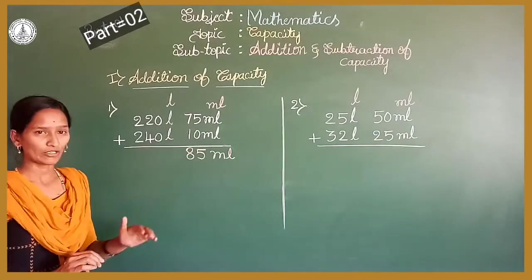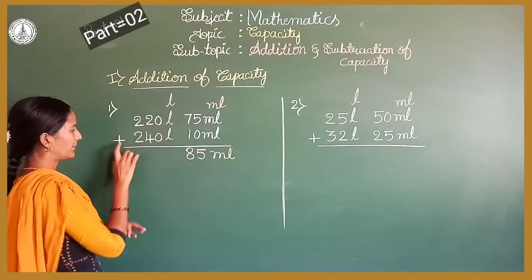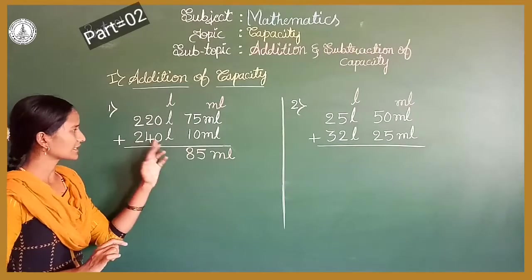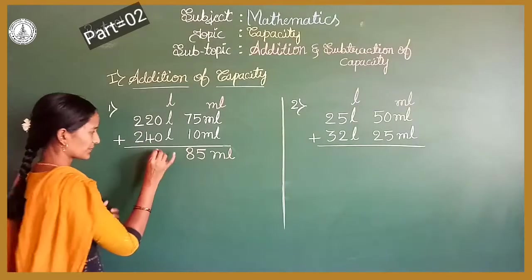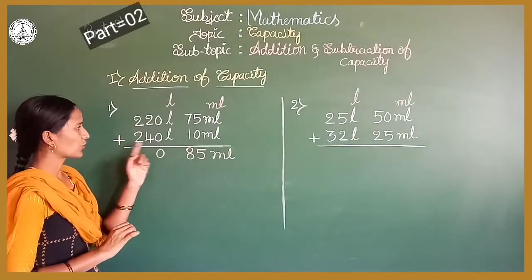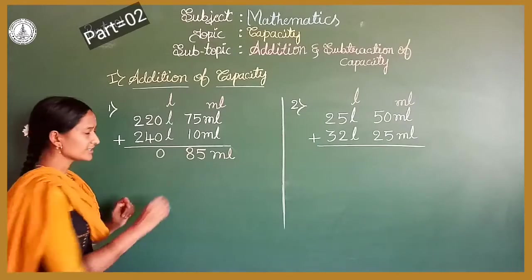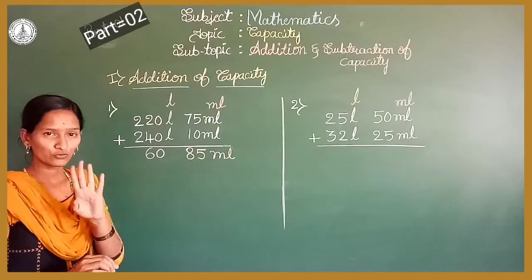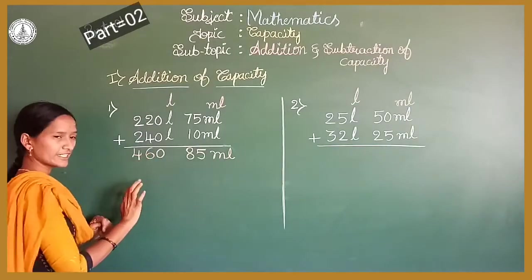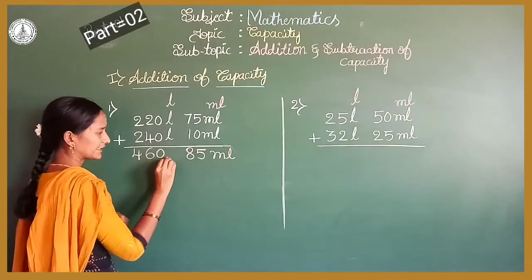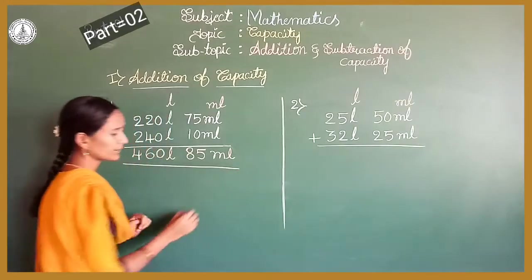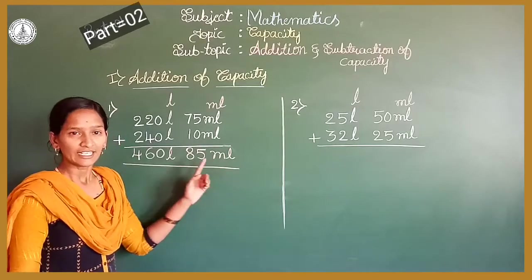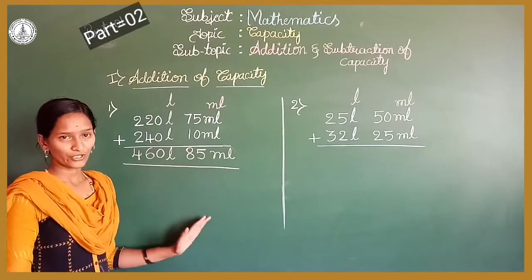Now moving to the litre part. 220 litres plus 240 litres. 0 plus 0 is 0. Write down 0. Next, 2 plus 4 is 6. Write down 6. Next, 2 plus 2 is 4. Write down 4. It is 460 litres. So the sum is 460 litres 85 millilitres.